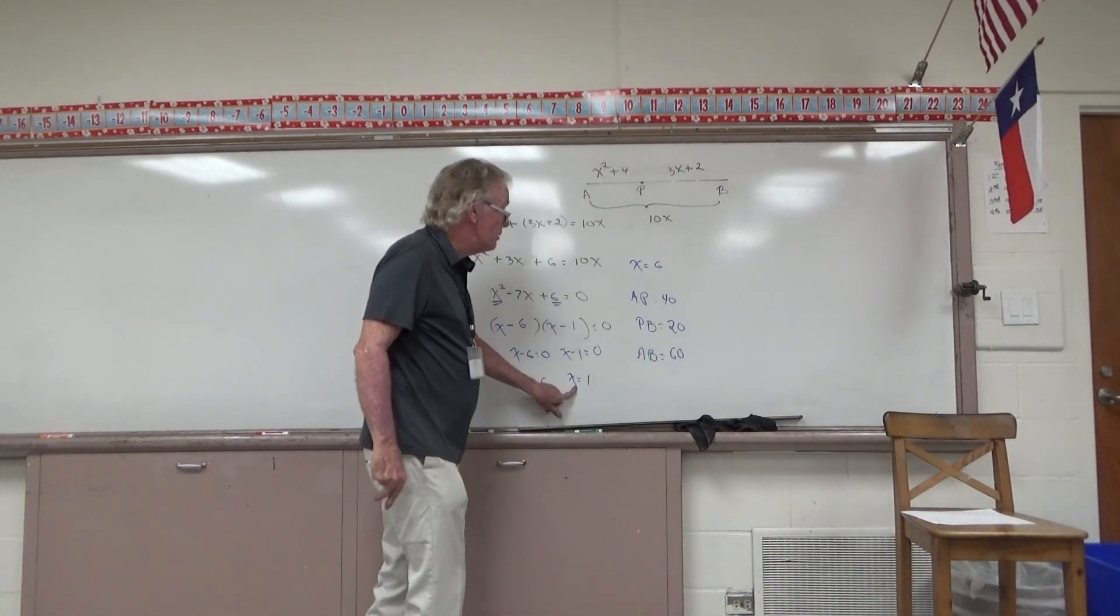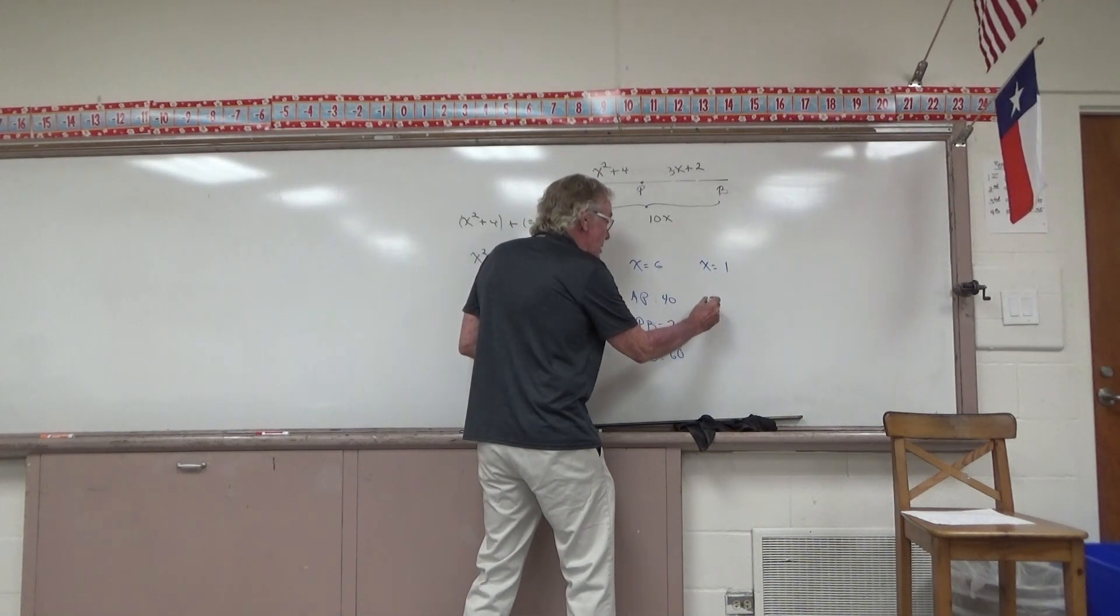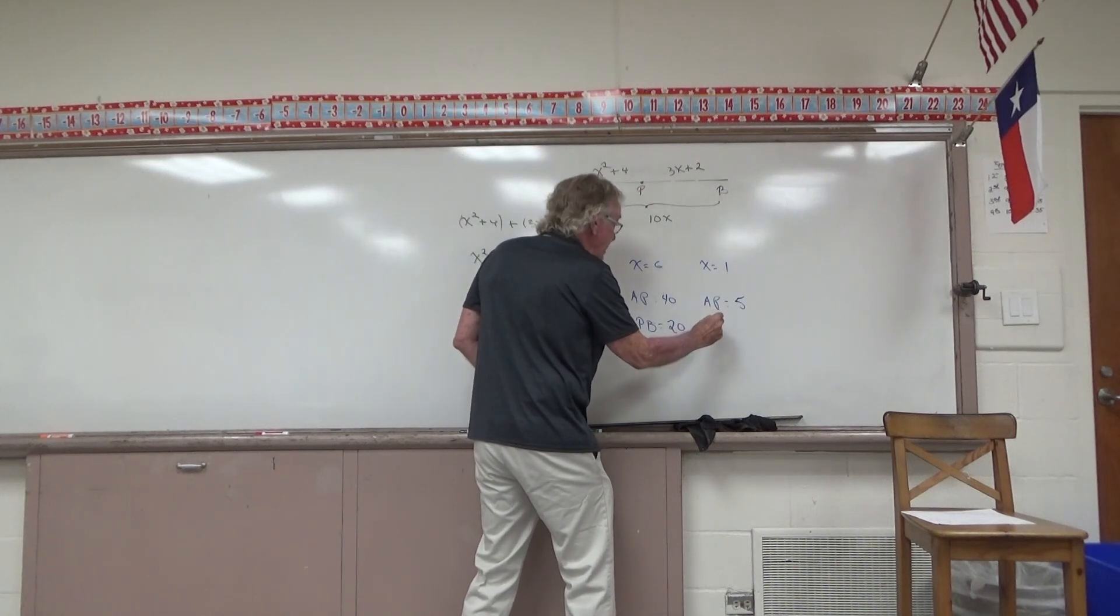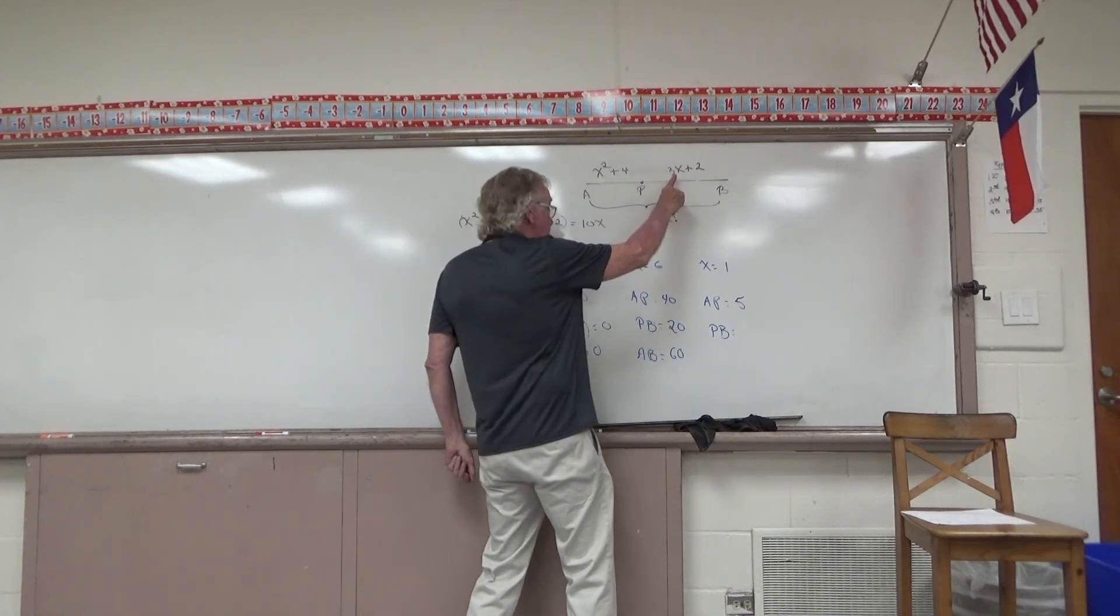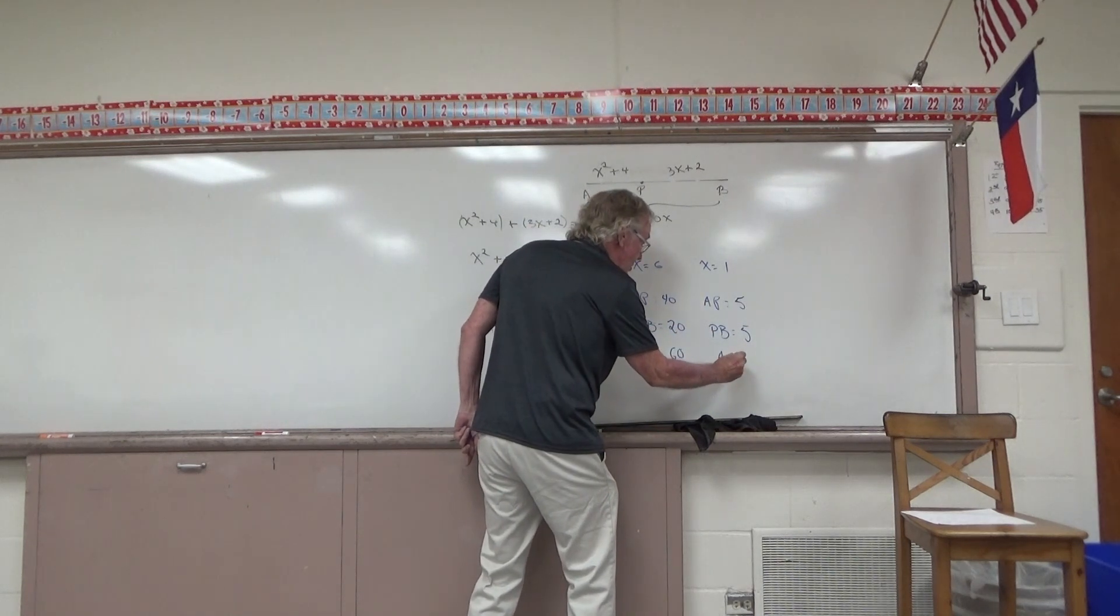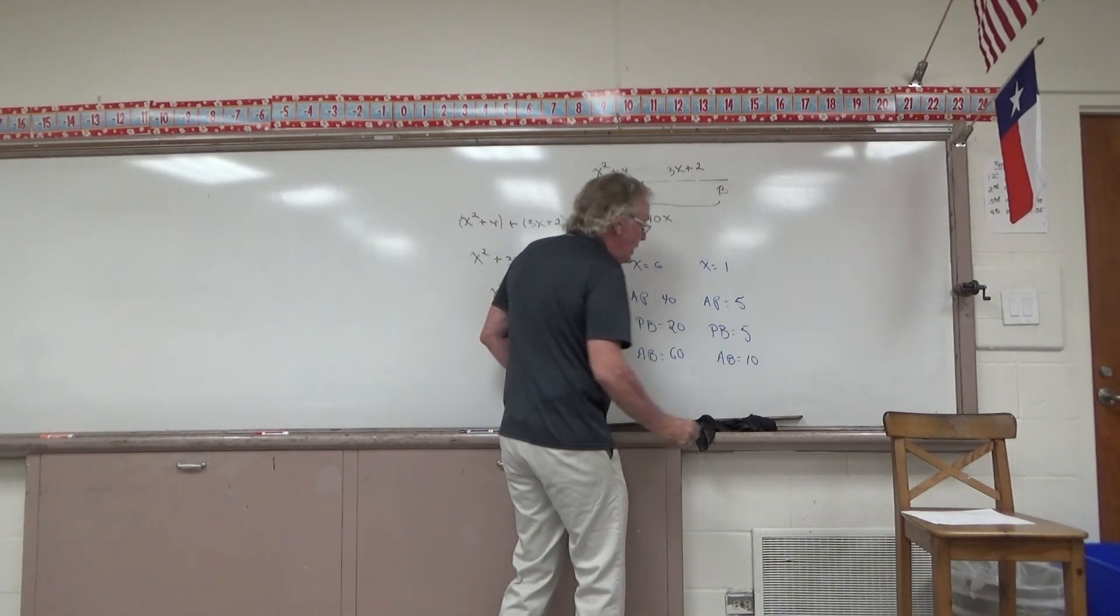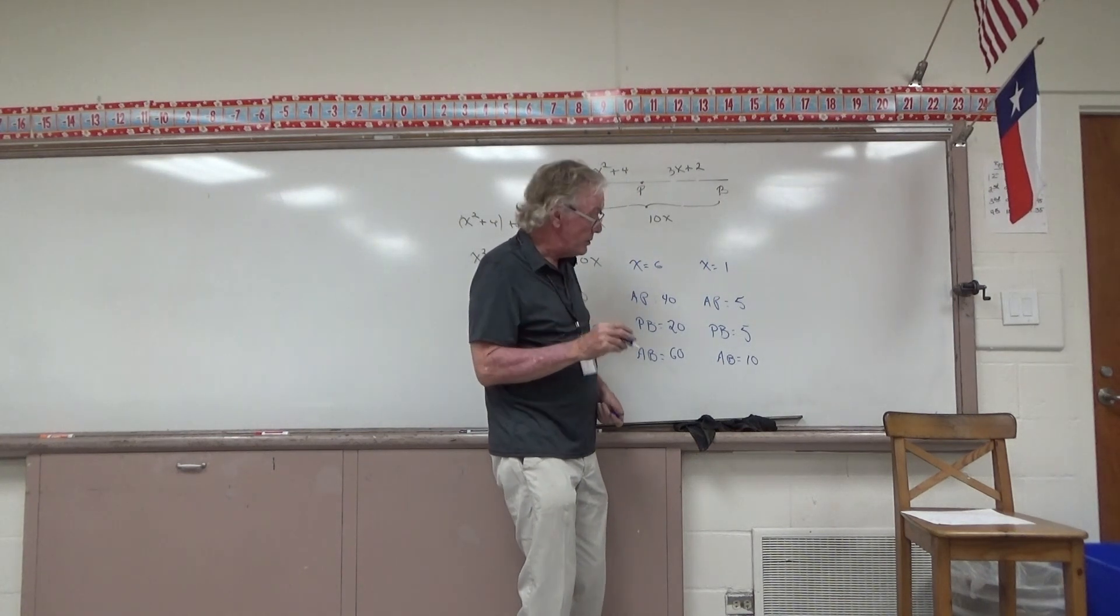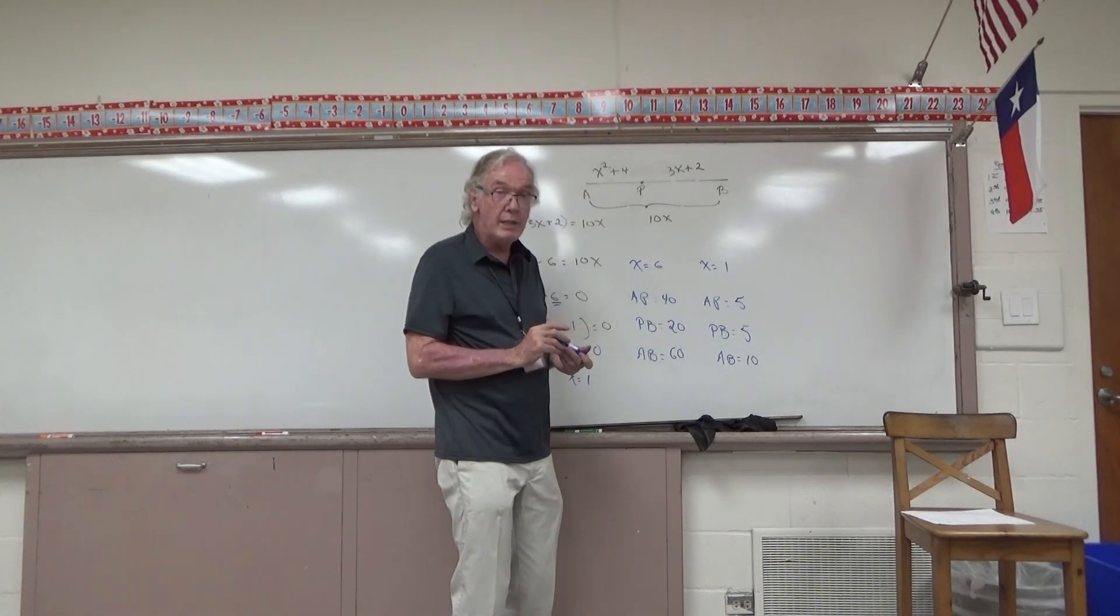What if X were equal to 1? Let's investigate that too, as well. If X were equal to 1, what about the length of AP? If X were 1, 1 squared is just 1, and 1 plus 4 is 5. PB? 3 times 1, just 3, plus 2 would be 5 again. Okay. Well, what about AB? Well, if X is 1, AB, 10 times 1, just got to be 10. They do add up correctly. This could be 5, and this could be 5, and the whole thing could be 10. And you might make a note on this one, by golly. P, if X were equal to 1 with these lengths, it's clear to me that P is the midpoint of segment AB.